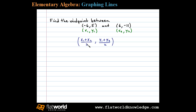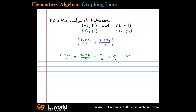We'll calculate each coordinate of the midpoint individually. x1 plus x2 over 2 is equal to negative 6 plus 6, over 2, or 0 divided by 2, which is 0. This is the x value of the midpoint.